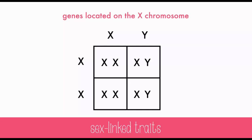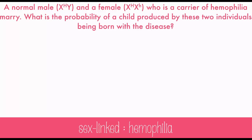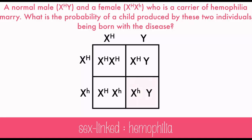Let's look at a few sex-linked problems. A normal male and a female who is a carrier for hemophilia marry. What's the probability of a child being born with the disease? This Punnett Square will show us the probability of having males and females and whether they'll have the trait. Set it up as you normally would — put the trait as a superscript, and the Y will not carry the trait because it only exists on the X chromosome. Having at least one normal allele makes the person normal, so all the females are okay. But since males only get one X chromosome, there's a 50% chance among the males that they'll have hemophilia — just a 25% chance overall.